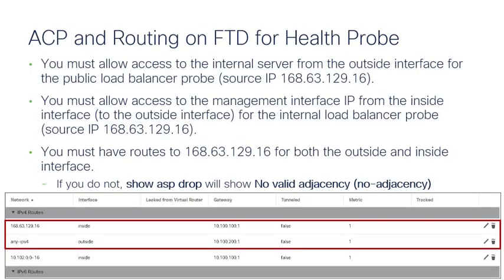Now for routing, there's one gotcha: the health probes need to be responded to, and the health probes use the same IP address — 168.63.129.16 — for both the inside and outside load balancers. We have a default route that will guarantee the outside load balancer receives the response, but we also have to add a route for that IP address with the exit interface being the inside. Typically you'll have that default route, but you'll have to add that extra route for your probe on the inside.